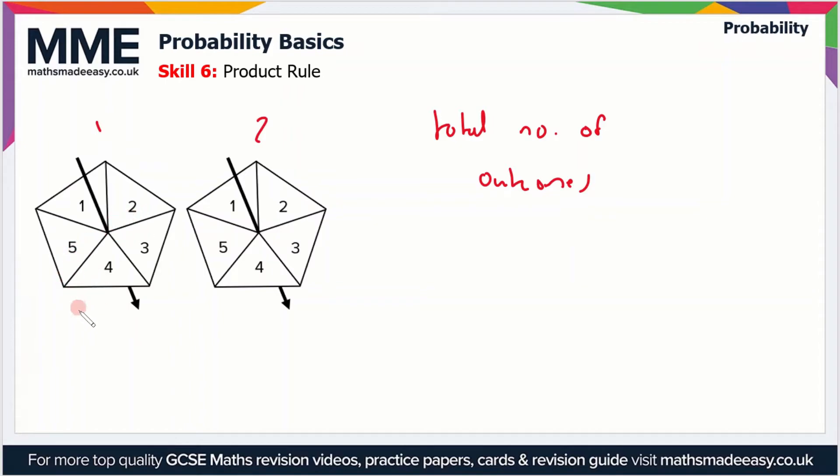The one on the right is Spinner 2. If I want to know the total number of outcomes, I can total up the number of outcomes for Spinner 1, and that is 5, because there's just numbers 1, 2, 3, 4, and 5. That's the same for Spinner 2 because they're identical spinners. In order to get the total number of outcomes, all I have to do is multiply the number of outcomes for Spinner 1 by the number of outcomes for Spinner 2. So the total number of outcomes is just 5 times 5, which equals 25.